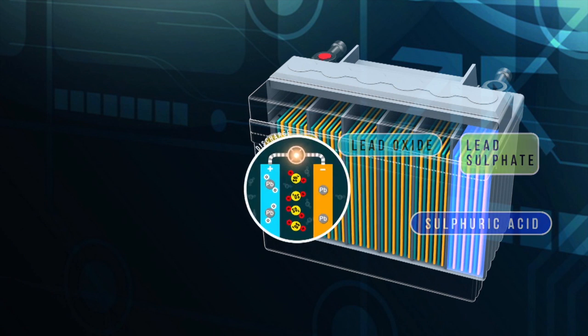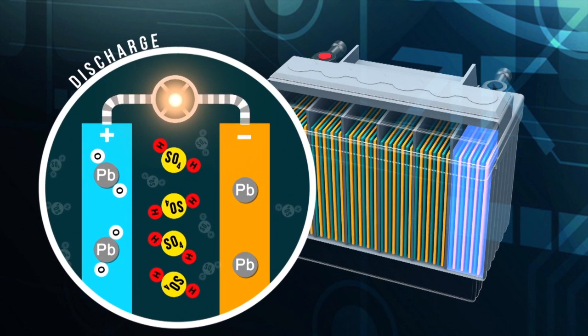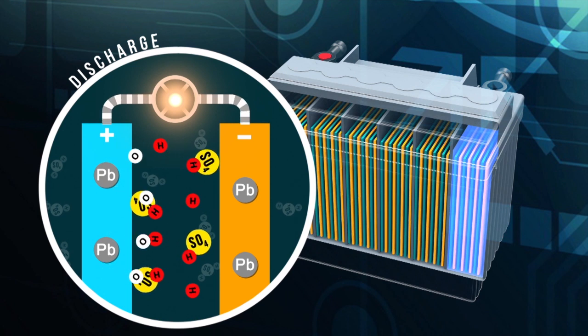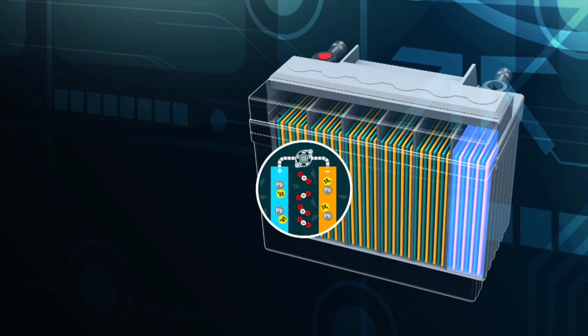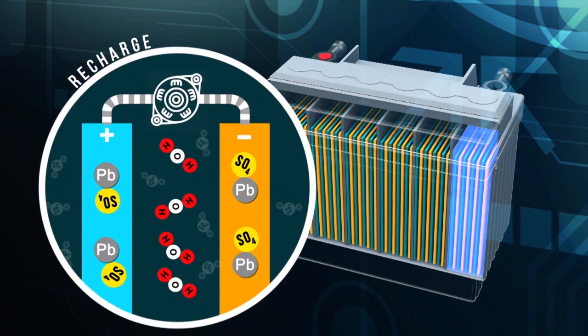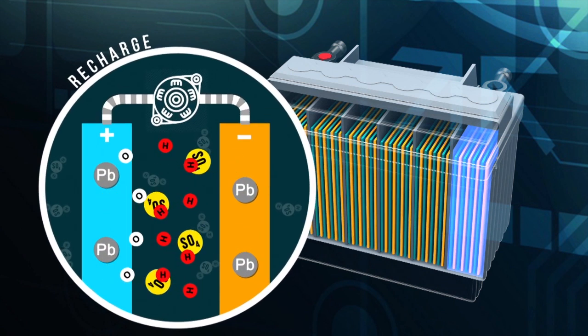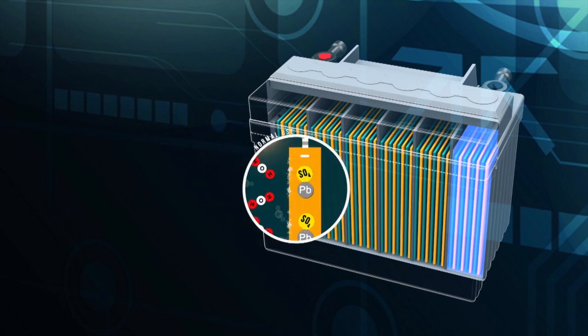In the process of a battery discharge, sulfate ions from the electrolyte react with the electrodes to form lead sulfate. Upon recharging, these compounds dissolve with the sulfate ions returning to the electrolyte.